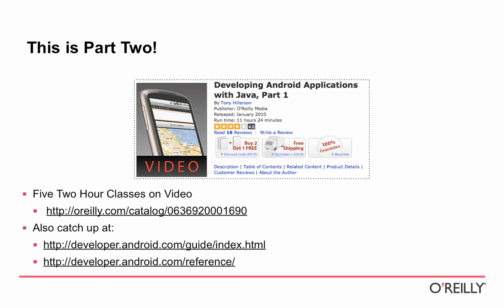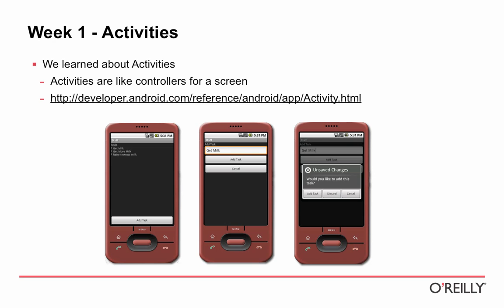There are a couple of links at the bottom of this slide to some Android documentation, which would be good for you to review and keep in your bookmarks as you go through Android development. The first part was set up similarly to this class. We went through five weeks of building a task manager application for Android — a simple app that would let you store a list of tasks and check them off as you complete them.